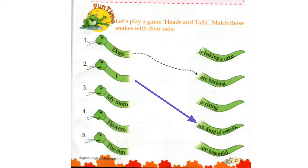Number three: My mom. Mom is a singular noun, so the helping verb will be Is. My mom is baking a cake.